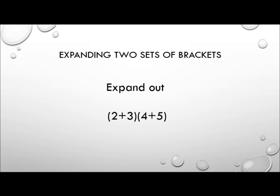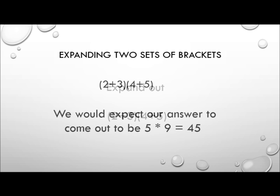Let's expand out (2+3)(4+5). We always evaluate brackets first according to order of priorities: 2+3 is 5 and 4+5 is 9. So we would expect our answer to come out to be 5 times 9, which is 45.